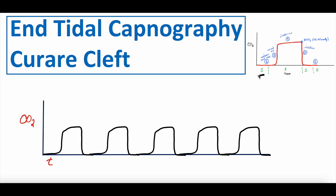There's both inhalation and exhalation on this waveform. Within the exhalatory cycle, there are four different phases — 0, 1, 2, 3 — that involve the exhalation of different respiratory anatomic spaces: starting with dead space, going into mixed air, plateauing at alveolar air, and then ending at this peak, which is the actual end-tidal CO2 that the monitor displays — normal being 35 to 45 mmHg.